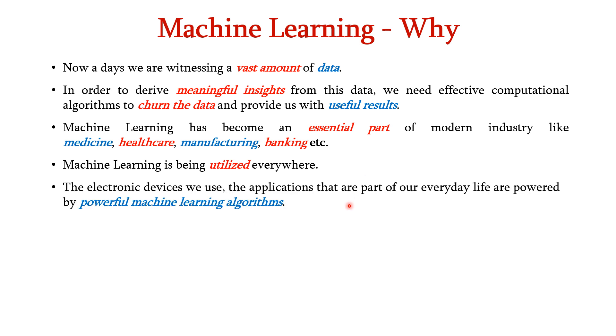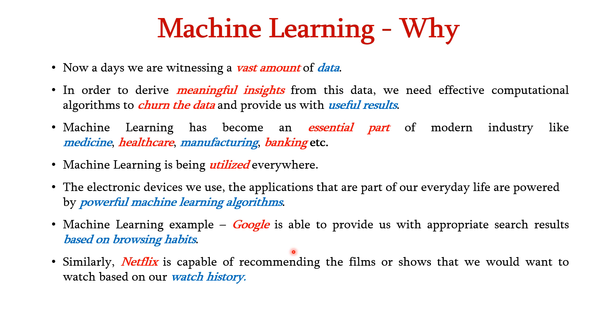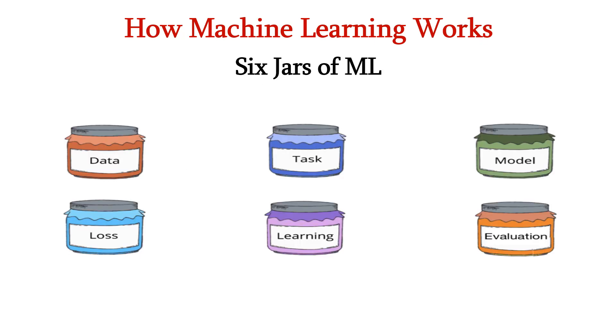The electronic devices we use, the applications that are part of our everyday life are all powered with machine learning algorithms. For example, Google is able to provide us with appropriate search results based on our browsing history. Netflix is capable of recommending the films or shows that we would want to watch based on our watch history.